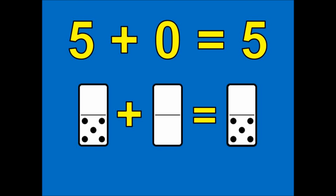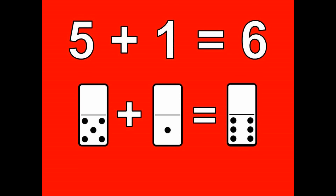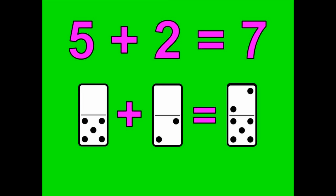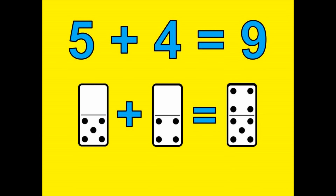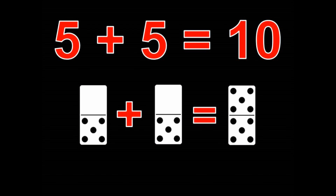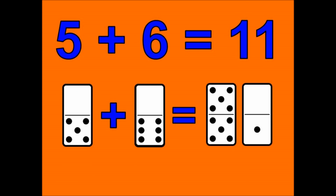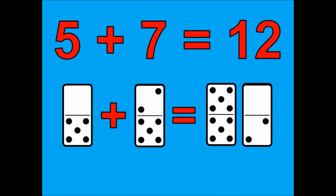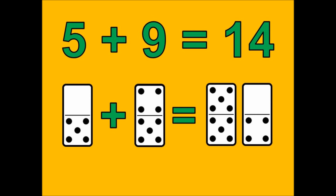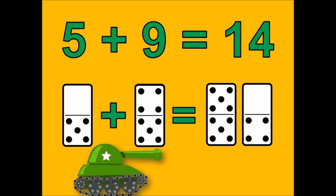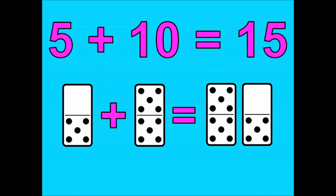Five plus zero is five. Five plus one is six. Five plus two is seven. Five plus three is eight. Five plus four is nine. Five plus five is ten. Five plus six is eleven. Five plus seven is twelve. Five plus eight is thirteen. Five plus nine is fourteen. Five plus ten is fifteen.